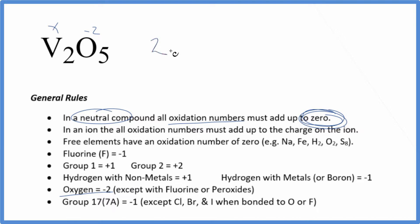So two times X, two X, five times minus two, minus ten, that equals zero.